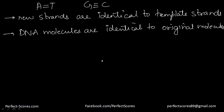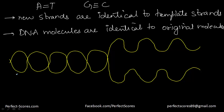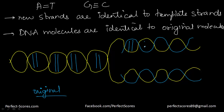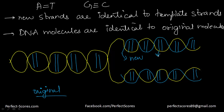DNA replication is a semi-conservative process. The original DNA strand splits into two portions, and a new strand forms alongside each original strand. Whenever a new double-stranded DNA molecule is formed, one strand comes from the original and one is newly synthesized. As shown in the diagram, the blue strand is the new one and the yellow strand is the original — that is why it is called semi-conservative.